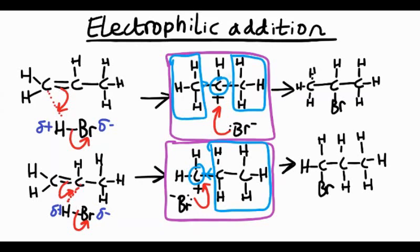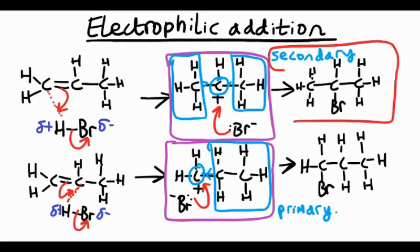The top molecule is a secondary carbocation; the bottom one is a primary carbocation. The top one is more stable because the electrons are being pushed from both directions onto the positive charge, stabilizing it. So our major product is going to be 2-bromopropane.